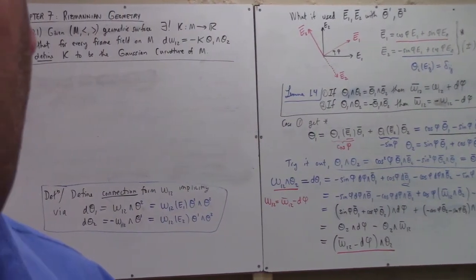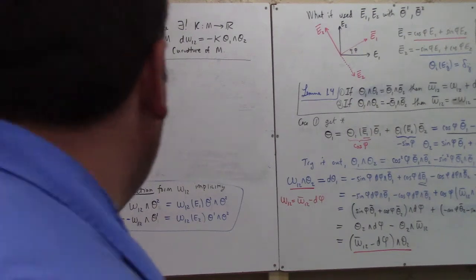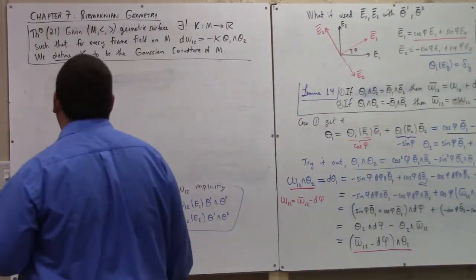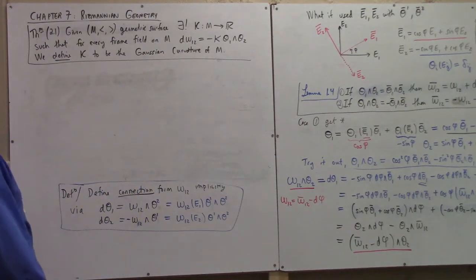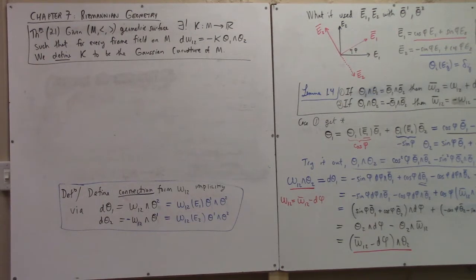Continuing, we now reach the theorem in section 7.2. Given a geometric surface, there exists a unique function from the surface to the reals such that for every frame field on M, the exterior derivative of the connection form is minus that function times the wedge product of theta 1 and theta 2, the co-frame fields.